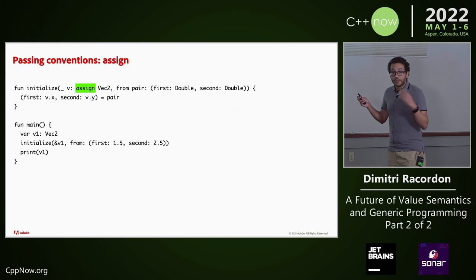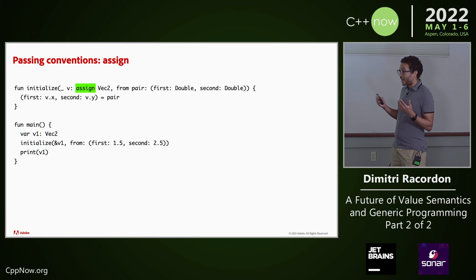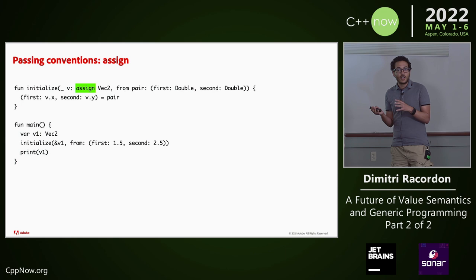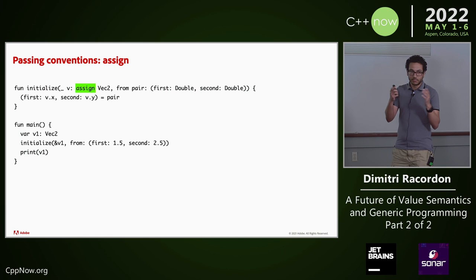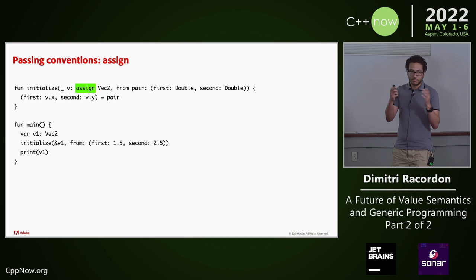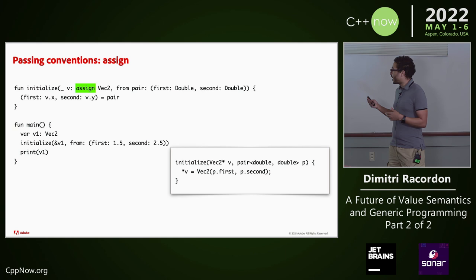There is a fourth passing convention, 'assign.' Assign is a bit more niche — it's like an in-out parameter, but the contract doesn't say the value is initialized at the beginning of the call. In fact, it says it's not initialized — so it's to initialize values with a function. It's called out-parameters in some other languages. We'll see how that is useful when we talk about projections.